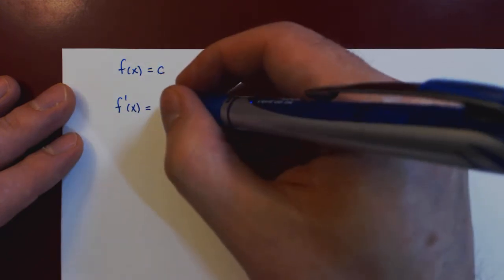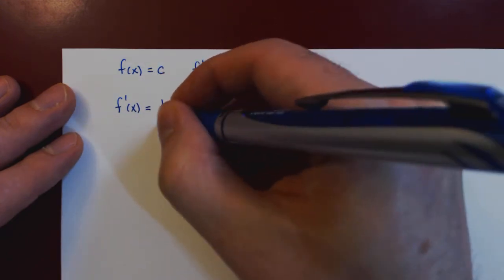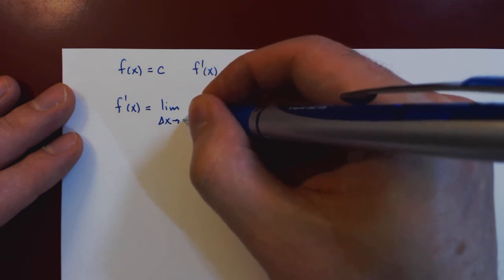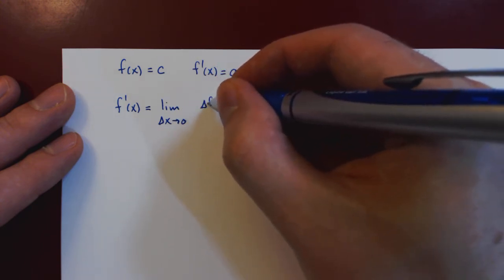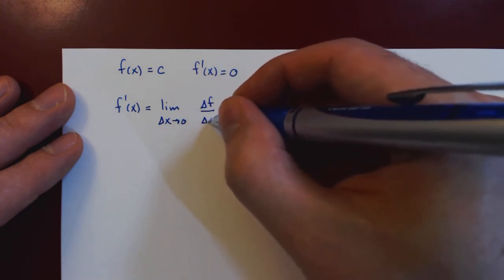So the derivative of f is, of course, by definition, the limit as delta x approaches 0 of the change in the function f over the change in x.